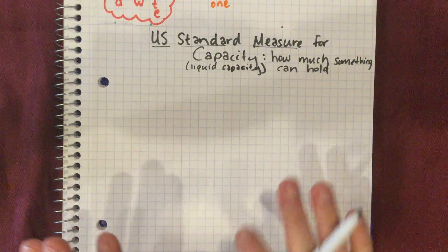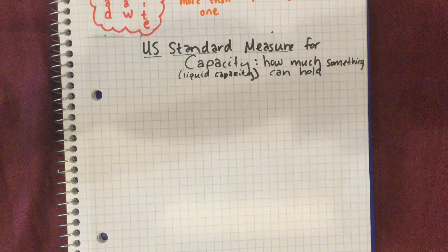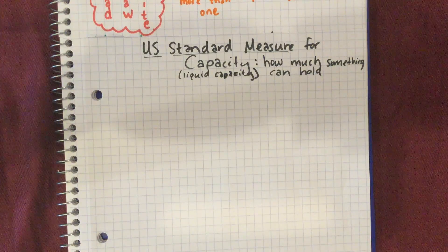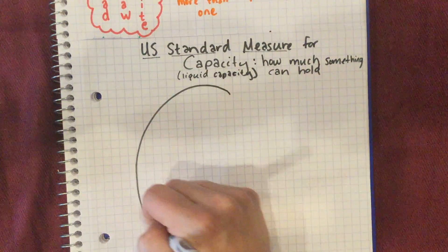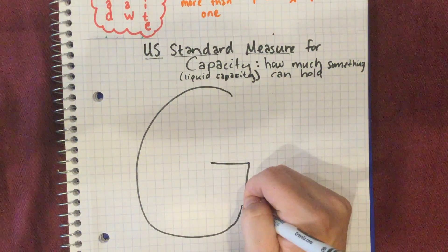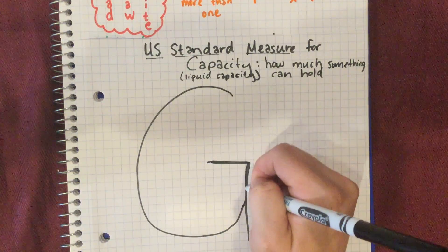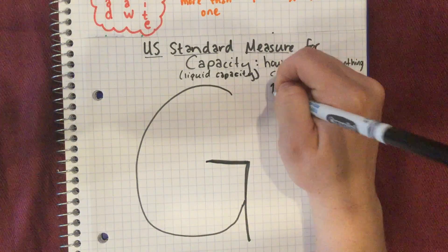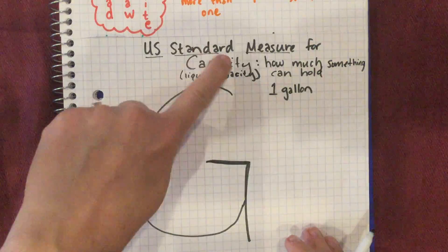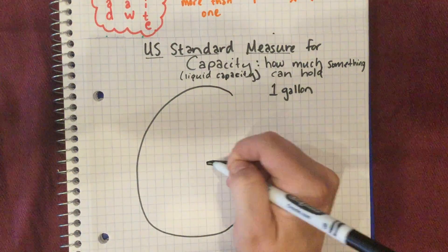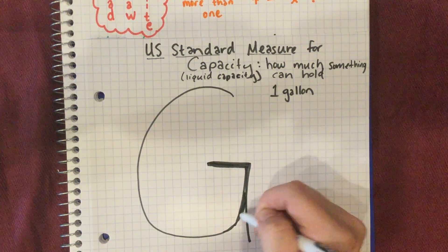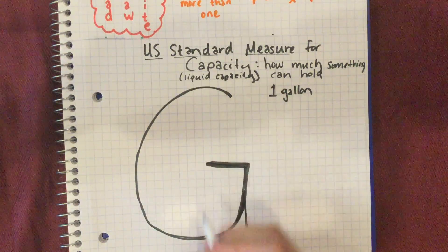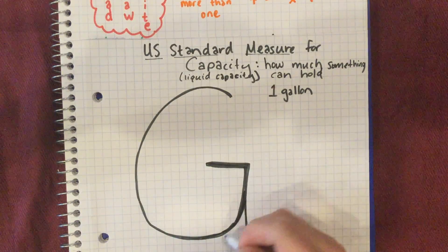Grab something to write with and something to write on, and draw this picture either with me or pause and draw it on your own. For U.S. standard measure for capacity, the largest unit we use in our household starts with the letter G. Milk usually comes in one of these, and so do orange juice and other drinks — this is a gallon. The gallon is the largest standard household U.S. capacity measure. I bet you have a gallon of something in your refrigerator right now; in ours it's coconut milk.